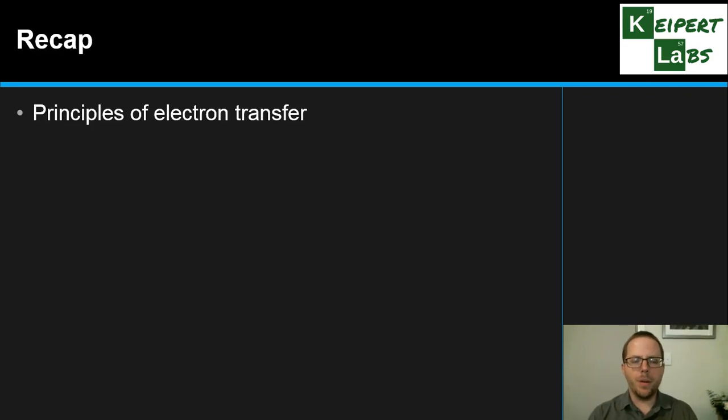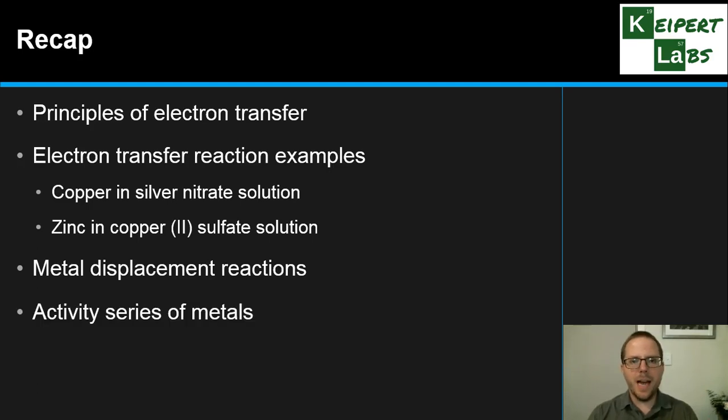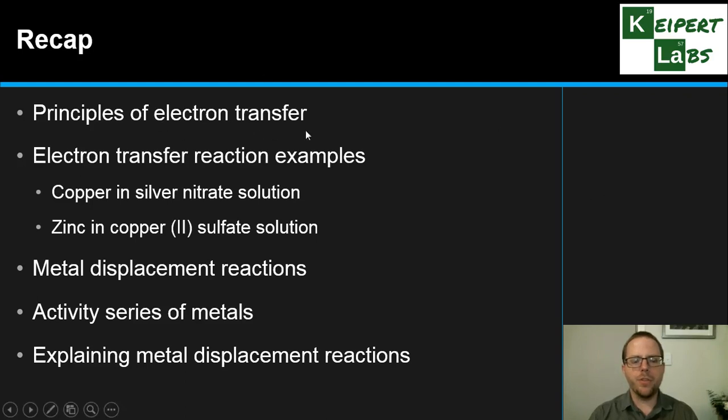So just to quickly recap: we talked about the principles of how electrons can transfer to cause chemical change. We went through two examples of the copper and silver nitrate, zinc and copper sulfate, where this kind of chemical change was occurring. We introduced them as examples of metal displacement reactions and we went through some of the principles. We related it to the activity series of metals and we went through how to explain how these reactions occur based on our principles of electron transfer. All right, thanks very much for watching. Bye for now.